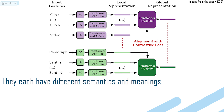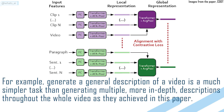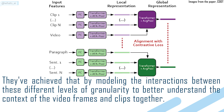They each have different semantics and meanings. For example, generating a general description of a video is a much simpler task than generating multiple, more in-depth descriptions throughout the whole video, as they achieved in this paper. They've achieved that by modeling the interactions between these different levels of granularity to better understand the context of the video frames and clips together.